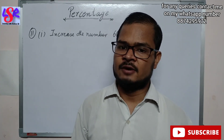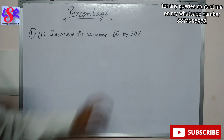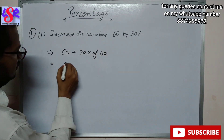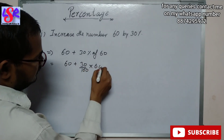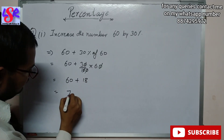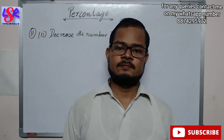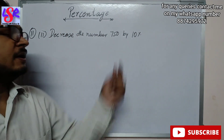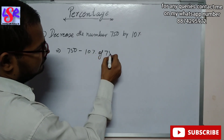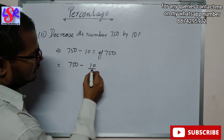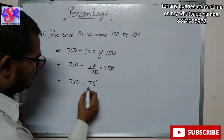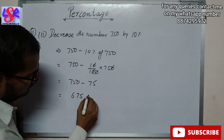Now we are moving to Question 11, first part. Here we have to increase the number 60 by 30%. This can be written as 60 plus 30% of 60, which equals 60 plus 30 upon 100 into 60. The zeros cancel and we get 60 plus 3 into 6, which is 18. So 60 plus 18 equals 78 as the answer. For the second part, we have to decrease 750 by 10%: 750 minus 10 upon 100 into 750. Zeros cancel, giving 750 minus 75, which equals 675 as the answer.